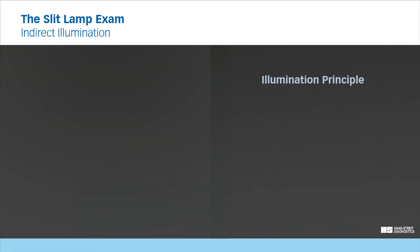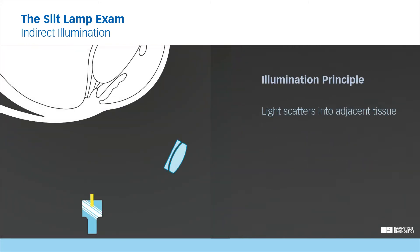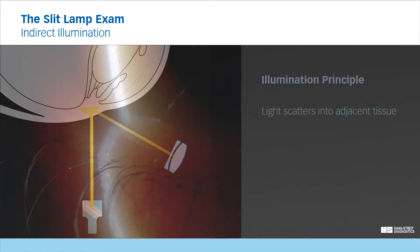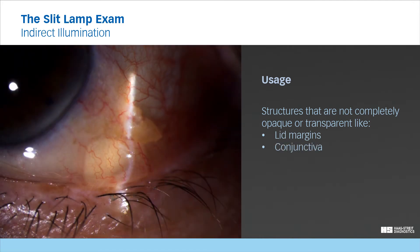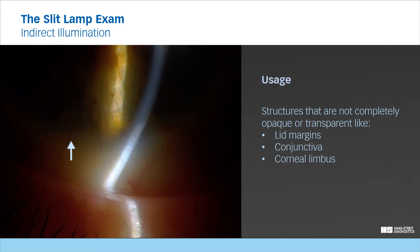Indirect illumination, sometimes referred to as proximal illumination, is a technique where light scatters from the directly illuminated section into the adjacent tissue, providing a secondary field of examination. It can be used in all structures that are not completely opaque or completely transparent, for example the lid margins, the conjunctiva, or the corneal limbus.